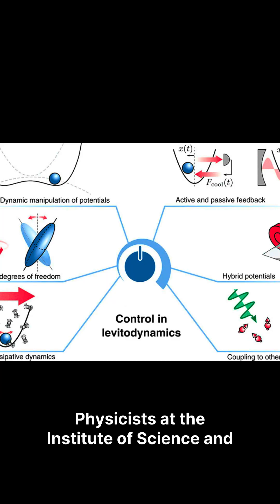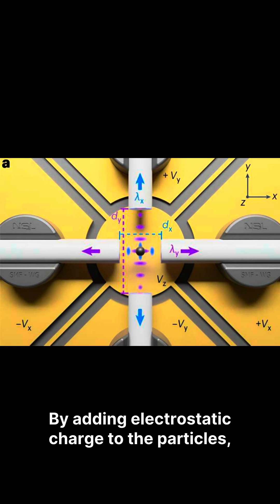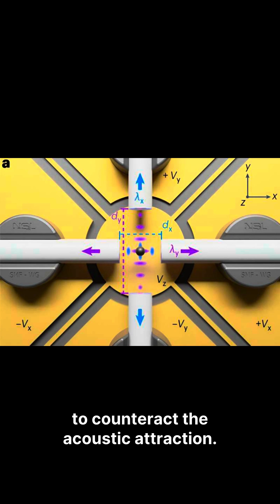Until now. Physicists at the Institute of Science and Technology Austria just found the solution. By adding electrostatic charge to the particles, they created a repulsive force strong enough to counteract the acoustic attraction.